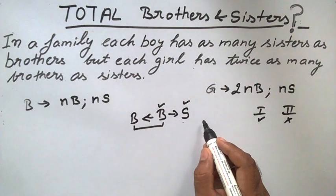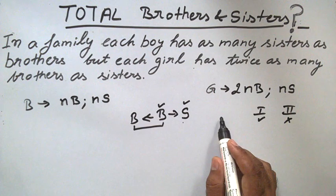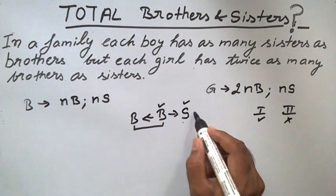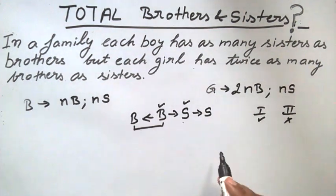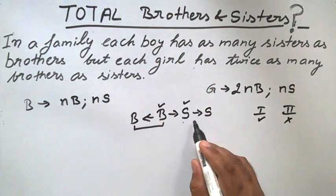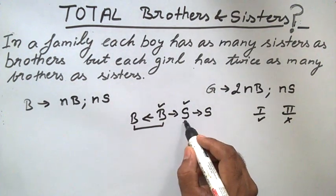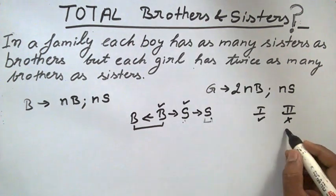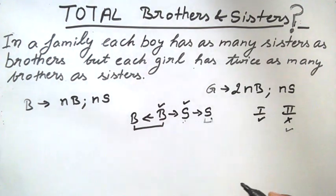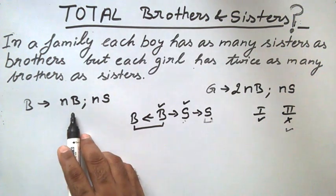We require twice as many brothers as sisters for the girl. So we need at least one sister to satisfy the second condition. Now the second condition is satisfied — for this girl there are two brothers and one sister. But after this change, the first condition no longer holds.